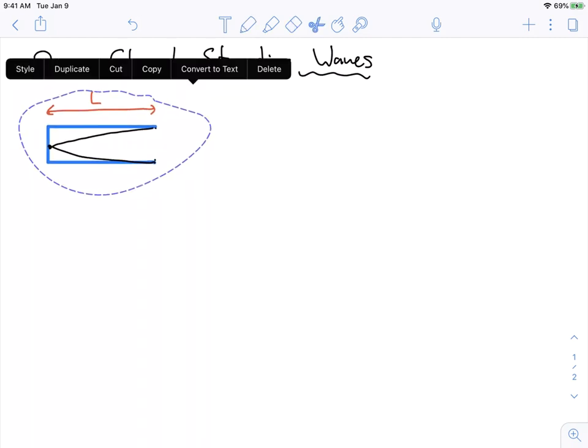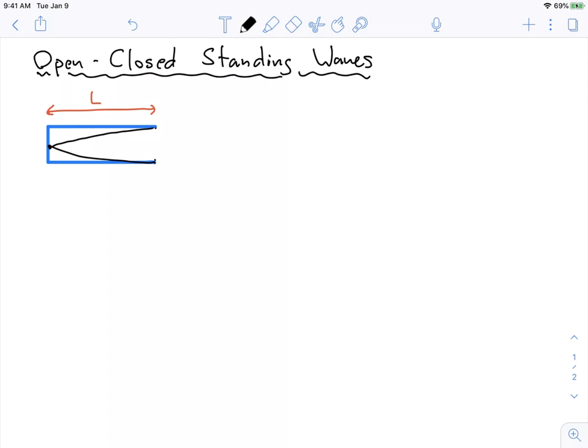I'm going to move this whole thing over a bit. The length of this is equal to lambda over four, which means that lambda is equal to four L over one.